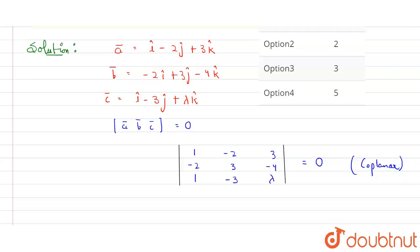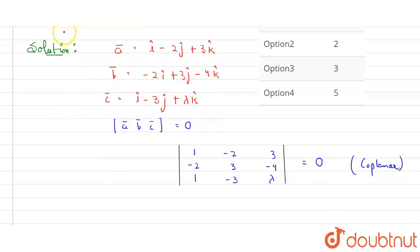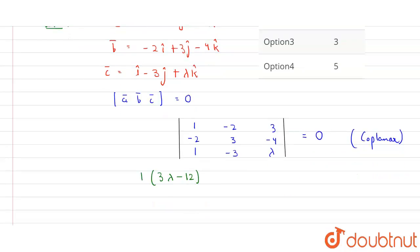Now just find the value here. We know how to find this like the way we do for determinant. It will be one bracket three lambda minus 12. Now for the second, plus two.